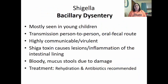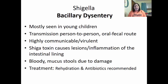The Shigella group is a facultative anaerobic gram-negative bacilli, which is why it's called bacillary dysentery. It is mostly seen in young children. Transmission is person-to-person through the oral-fecal route — when you don't wash your hands after going to the bathroom. It is highly communicable and virulent. The Shiga toxin causes lesions and inflammation of the intestinal lining. This is also known as traveler's diarrhea. It causes bloody mucous stool due to damage of the intestinal lining. Notably, this bacterium is not destroyed by stomach acid. Treatment is rehydration and antibiotics.